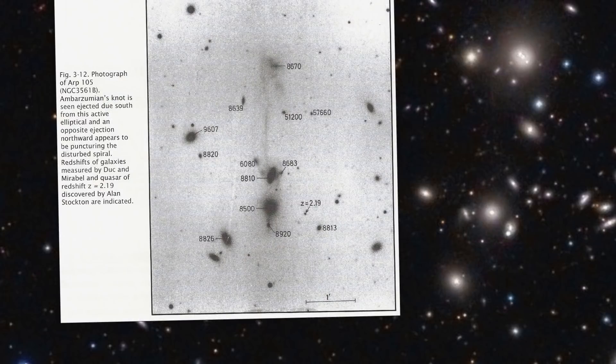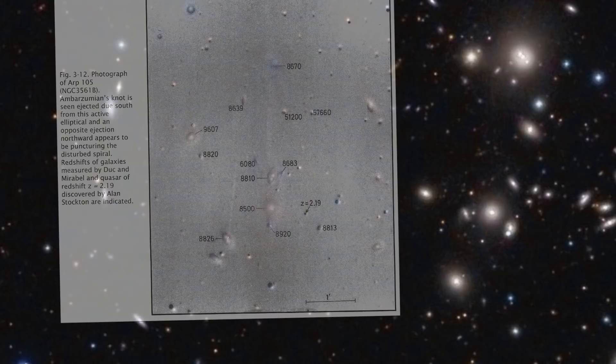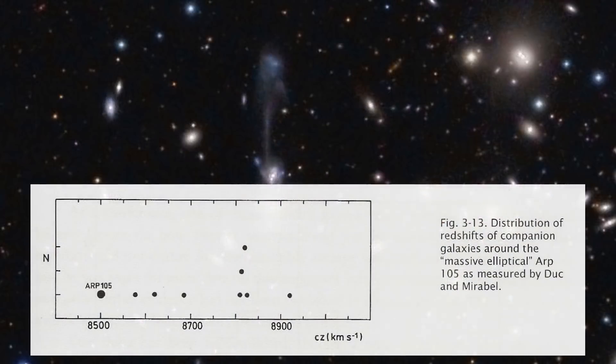Again close to this ejected galaxy we also find a quasar with a redshift of 2.2. If we examine the redshift of this group we see the same pattern as before. All the companions have a higher redshift when compared to the parent galaxy.